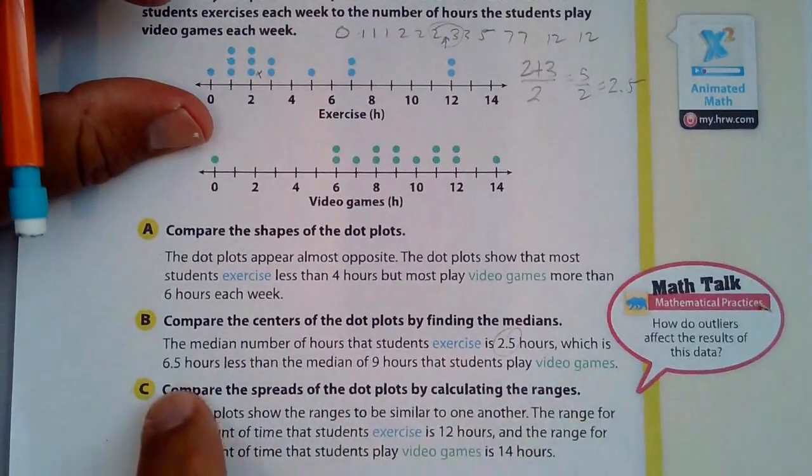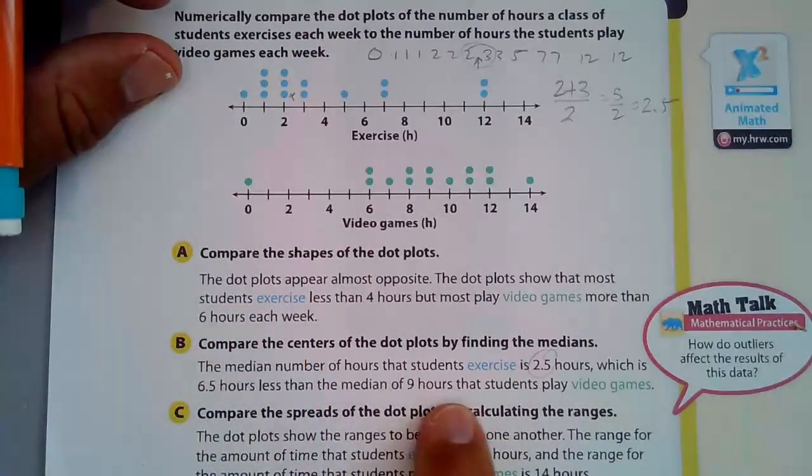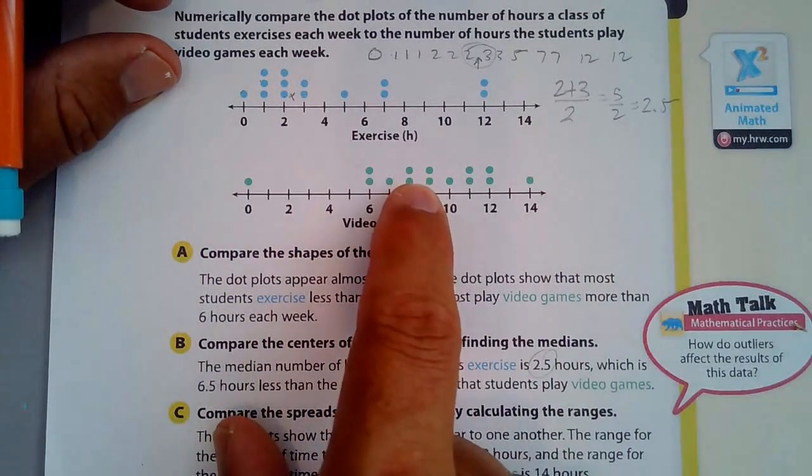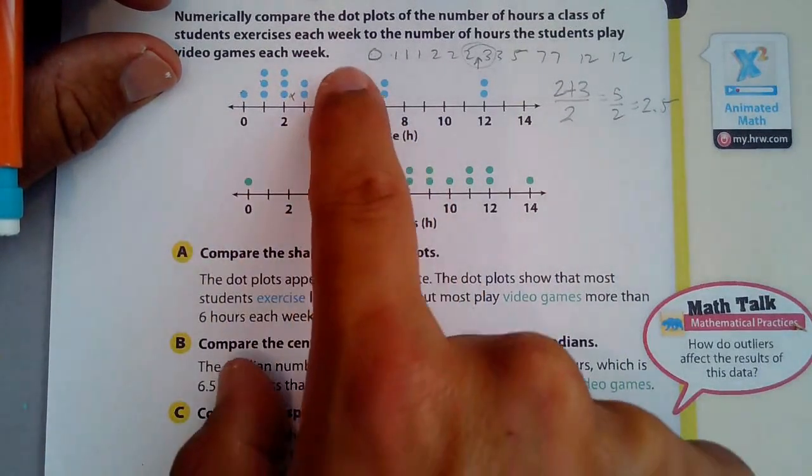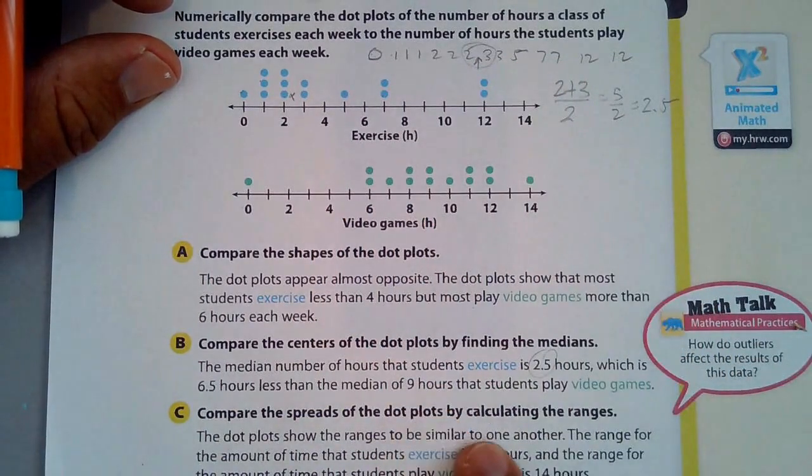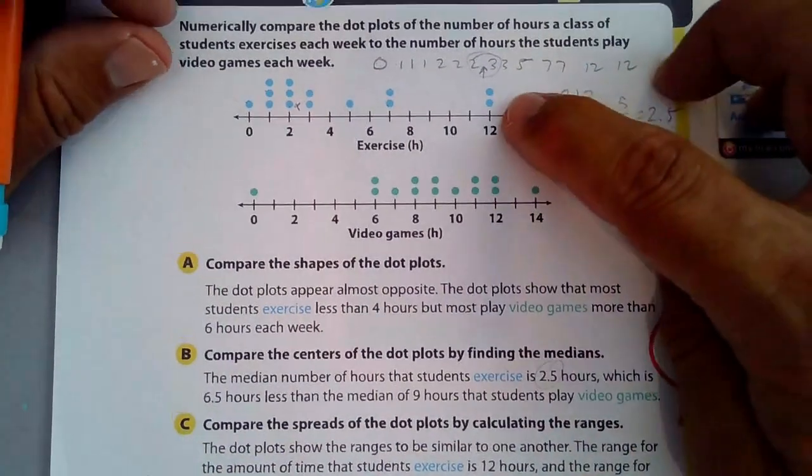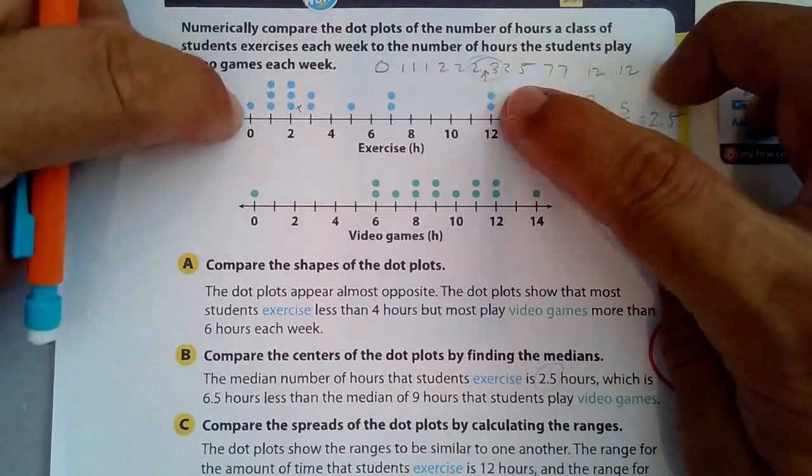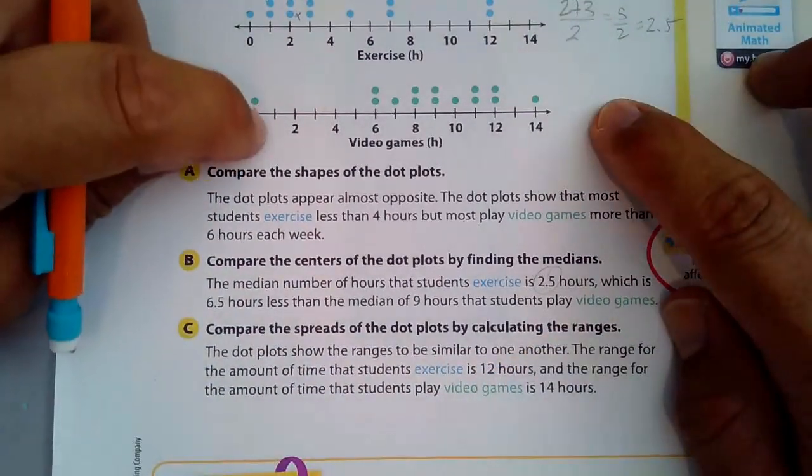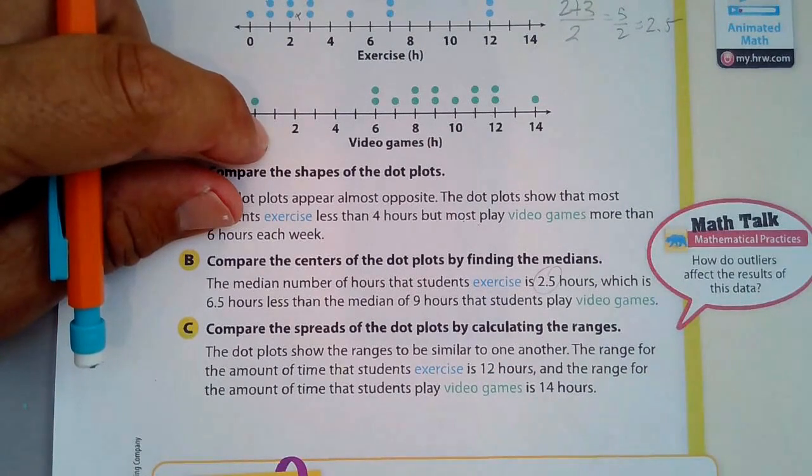Which is 6 and a half hours less than the median of 9. They calculated here that the median here is 9. The middle is 9 right there. By listing all the numbers like I did up here, listing them all and finding the middle number is 9. Compare the spreads of the dot plots by calculating the ranges. The range is the big minus small. So it's 12 minus 0. This is 12 for exercise. And for video games, it's 14 minus 0, and that's 14.